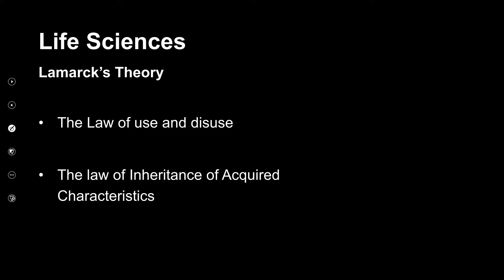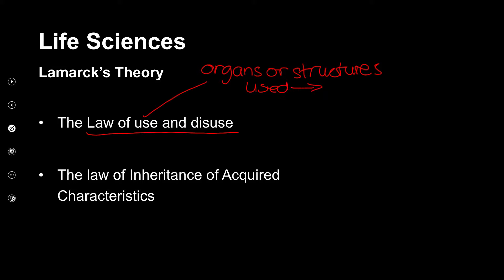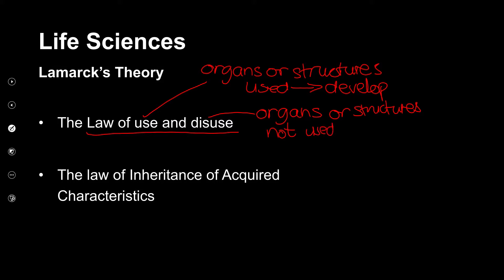His first law, the law of use and disuse, stated that if organs or structures were used, they would grow, develop, and become stronger, longer, or bigger, and that would be passed on to offspring. Conversely, when organs were not used, they disappeared.